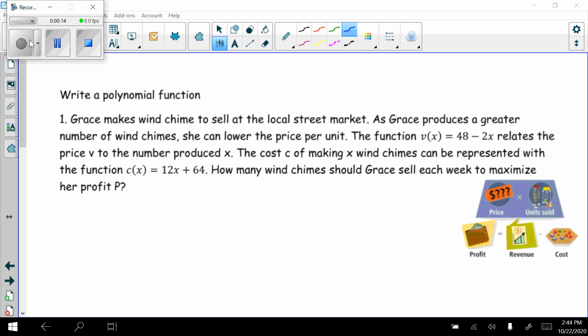The problem says Grace makes wind chimes to sell at the local street market. As Grace produces a greater number of wind chimes, she can lower the price per unit.